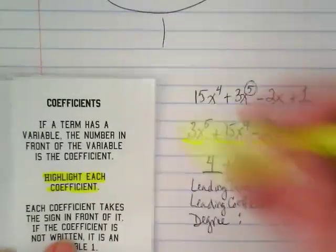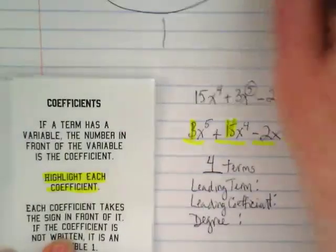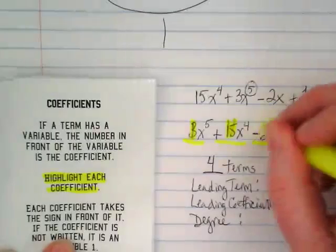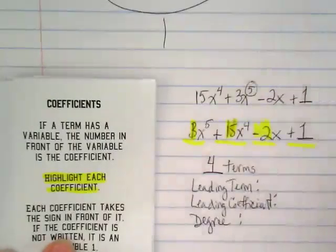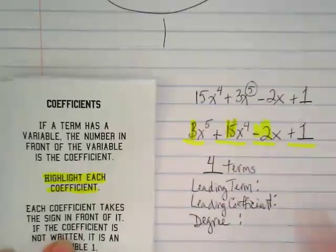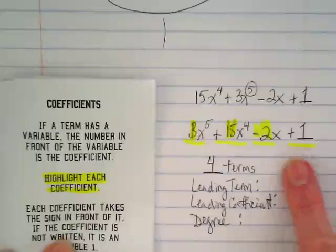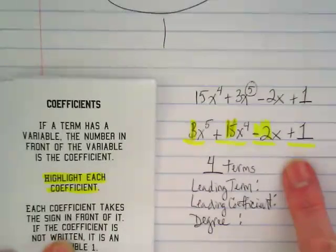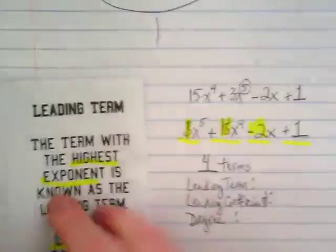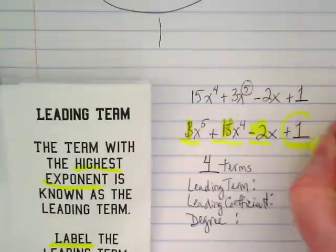We said we were going to highlight each coefficient. I have a coefficient of 3, 15. This highlighter is giving me... Negative 2. And then this is not a coefficient because it has no variable. What do we call this instead? Turn the page. It's a constant. And we said we were going to circle the constant if it was there.